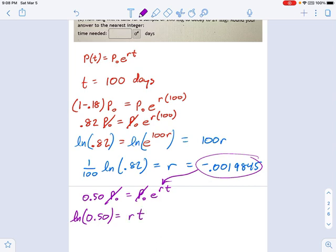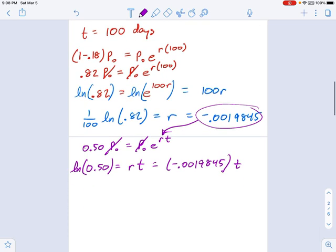Remember, I took the natural log of the right side, it cancelled out the E, and that equals negative 0.0019845 times T. So all I have to do at this stage is divide each side by this terrible decimal. So I get LN of 0.5 divided by negative 0.0019845, carry all those decimals, and that's going to give you T, the half-life of your element.